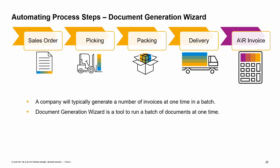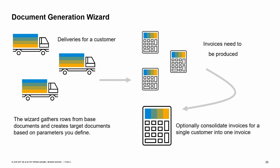A company will typically generate a number of invoices at one time in a batch. The document generation wizard is a tool to run a batch of documents at one time. The wizard follows a simple process used for gathering rows from base documents to target documents, based on several user-defined parameters. Examples of parameters that exist are target document type, posting date, document date, items or service, and many more. This wizard can be used, for example, to produce a summarized AR invoice for a customer containing all delivery notes that were created for the customer over the past week. It is a simple yet effective method of summarizing data to reduce data input.